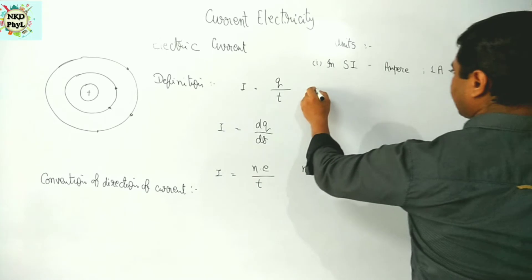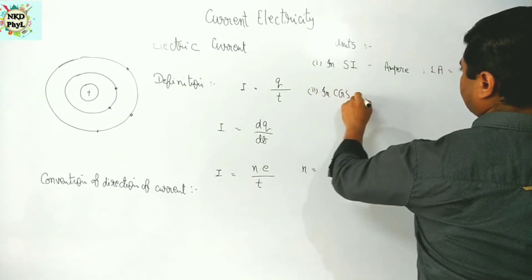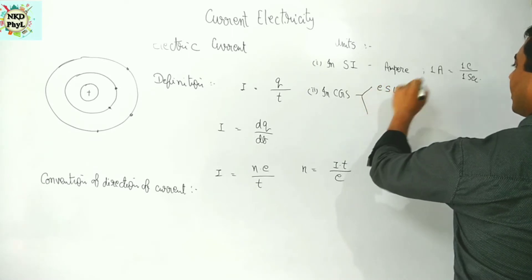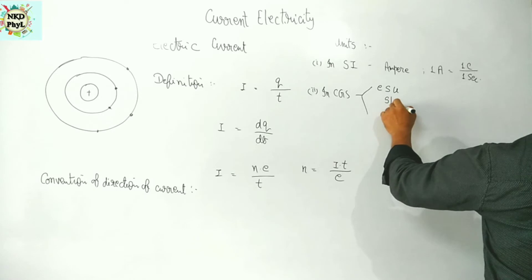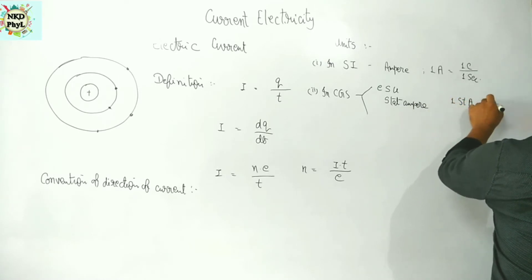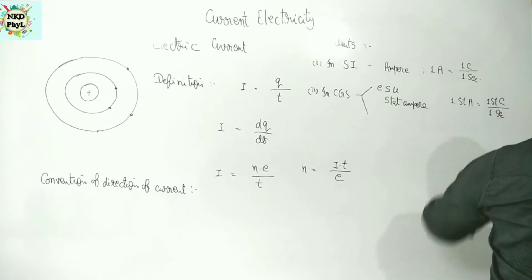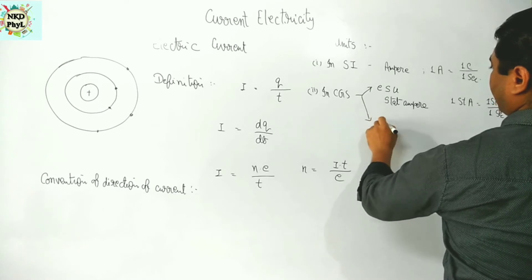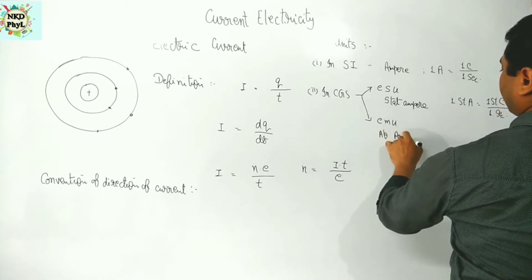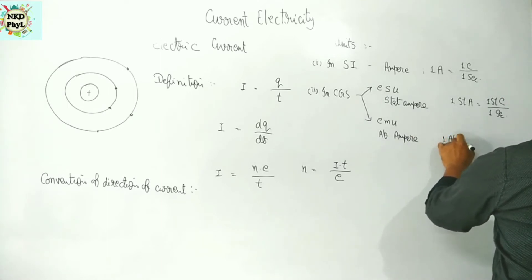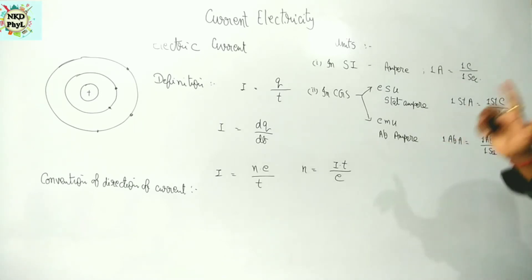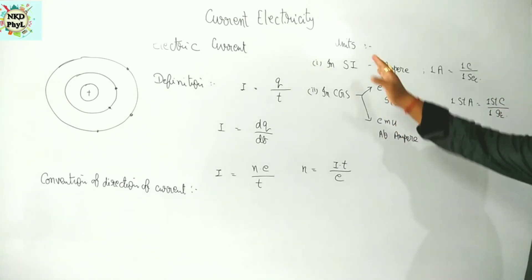In the CGS system, we have two CGS units. In electrostatic units (ESU), the unit is the stat ampere: one stat ampere equals one stat coulomb per one second. In electromagnetic units (EMU), we have the ab ampere: one ab ampere equals one ab coulomb per one second. This way we can have the units in both SI and CGS systems.